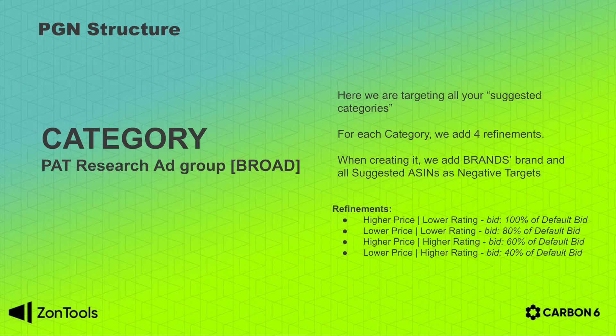Now for the last ad group, which is the category ad group. This ad group is very similar to a broad campaign, like a research ad group. It is the same as the brand ad group where targets are refined in four parts. Bids will be refined by higher price, lower rating with the highest likelihood of conversion, and we'll use 100% of the default bid. Then we will bid on lower price, lower rating categories with a less likely conversion, so we'll use 80% of the default bid.